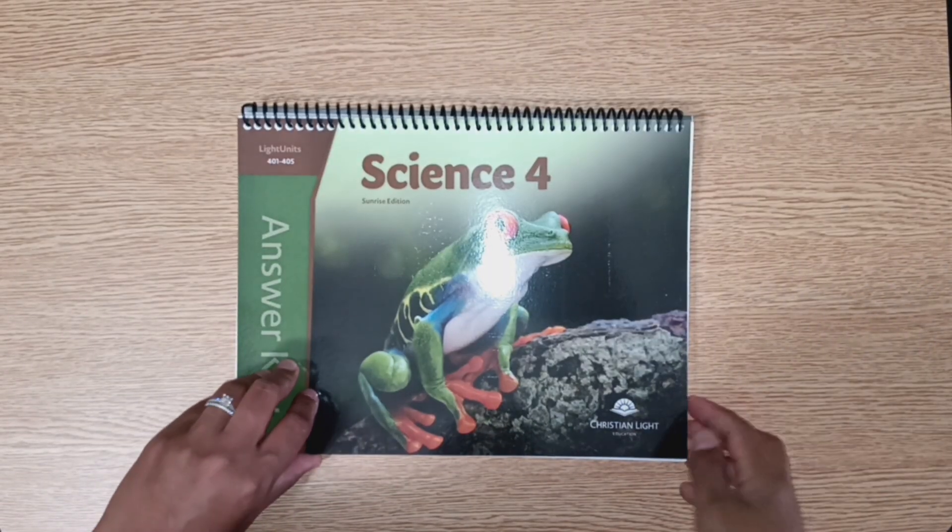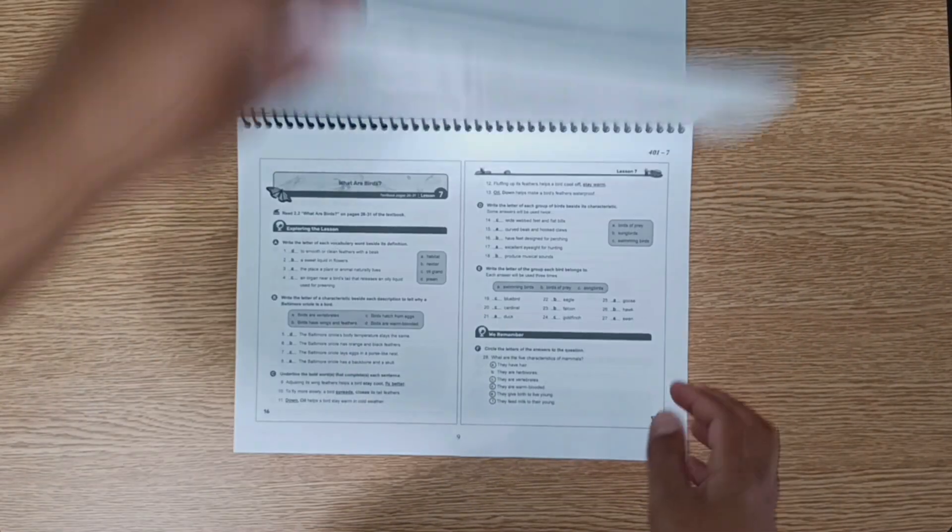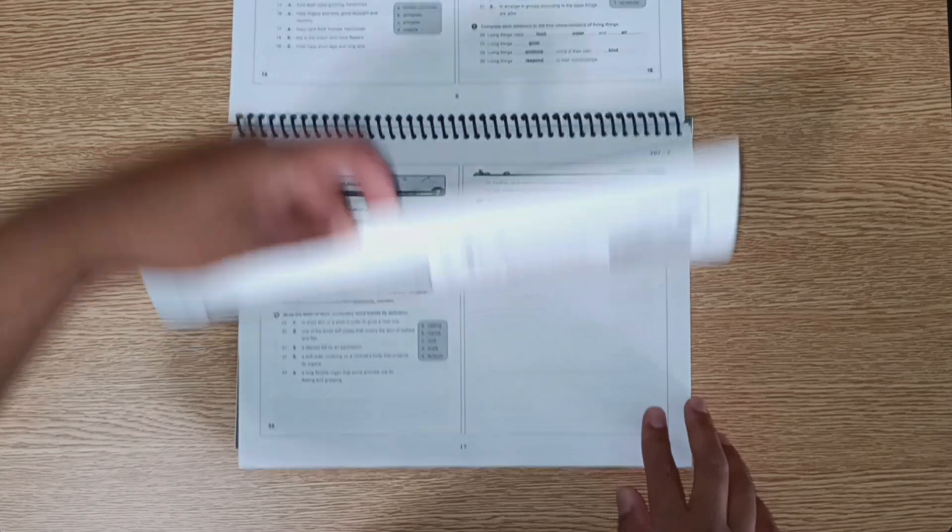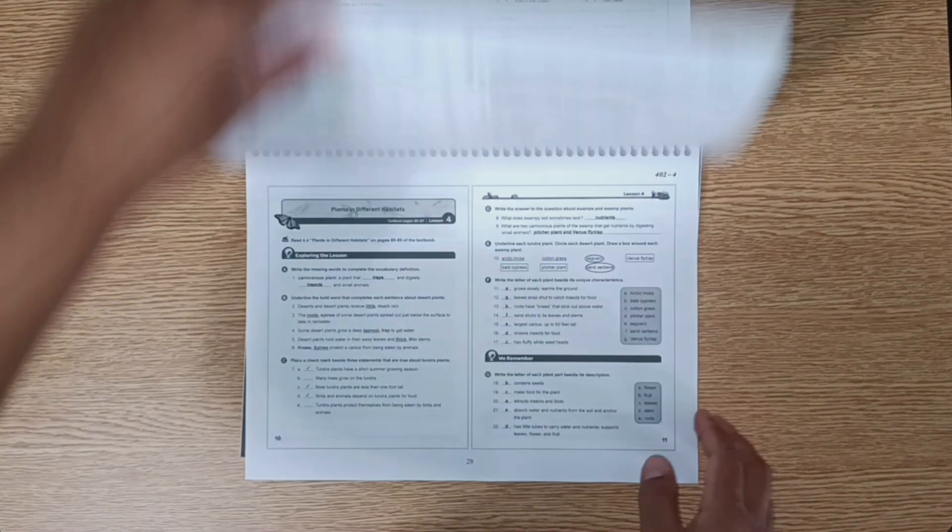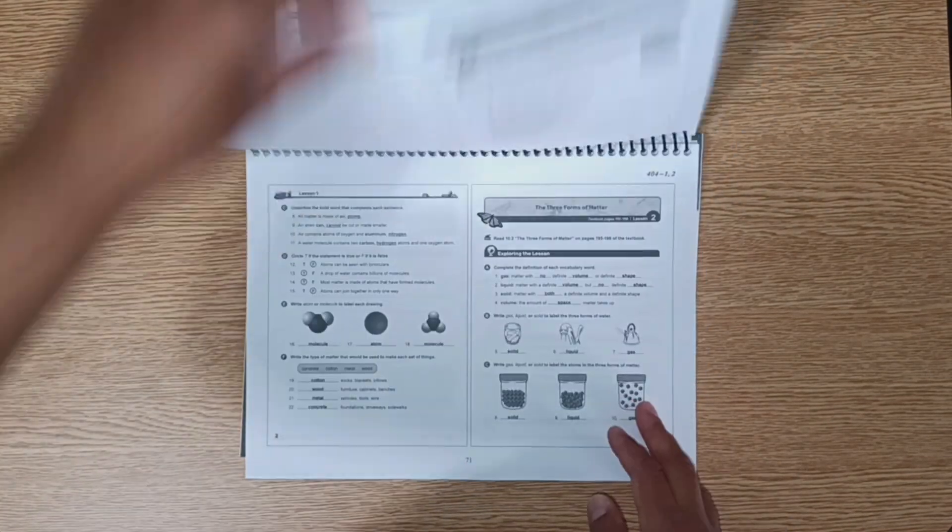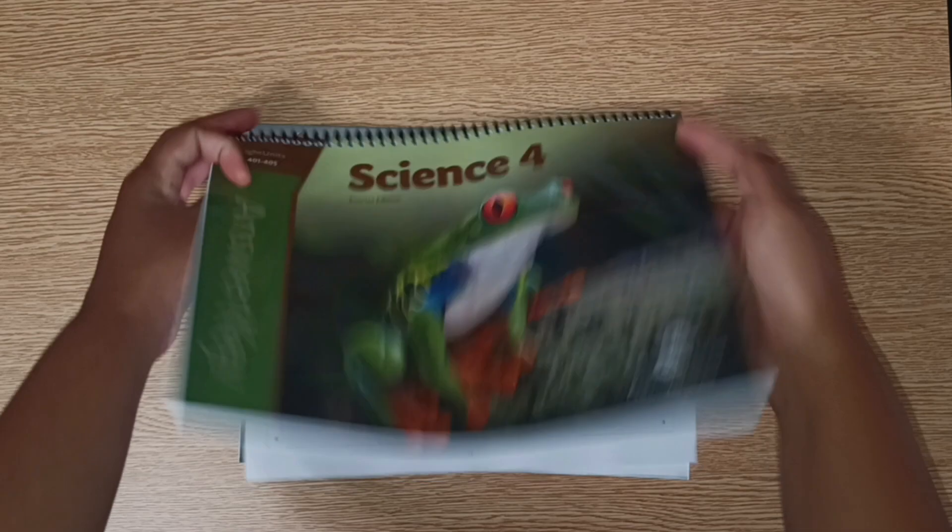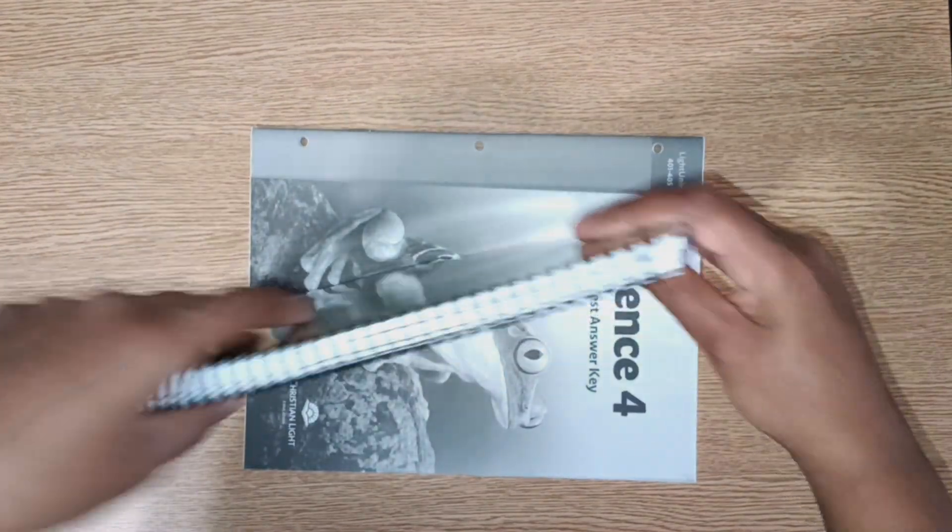The answer keys are very simple. This is the answer key for the light units. It's just the pages of the light units, except it has the answers. It's nice and thin, easy to carry around.